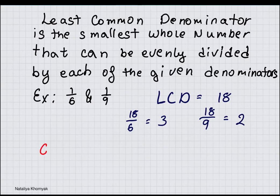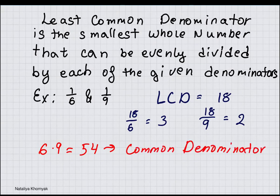If you only take 6 and 9 and you multiply them, which will give you 54, this will give you a common denominator. But it is not Least Common Denominator. Least Common Denominator is the smallest number that can be divided by 6 and 9.